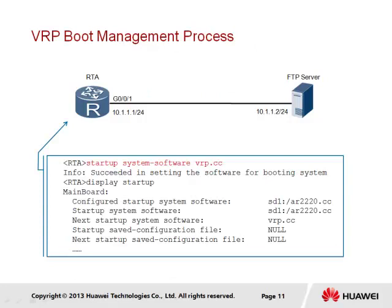The retrieval of an image file, as performed with both FTP and TFTP and represented by the .cc extension, should now be present within the storage of the client device RTA. In order for the new image to be used, however, it is necessary that the new image be specified as the image for next startup. The vrp.cc file retrieved from the FTP server is set to be the image for use during the next startup using the command startup system software, followed by the image name and extension. Once this command has succeeded, the display startup command can be used to view the resulting changes. In particular, we should look at the next startup system software option, which now shows vrp.cc as the VRP image to be used following restart of RTA.